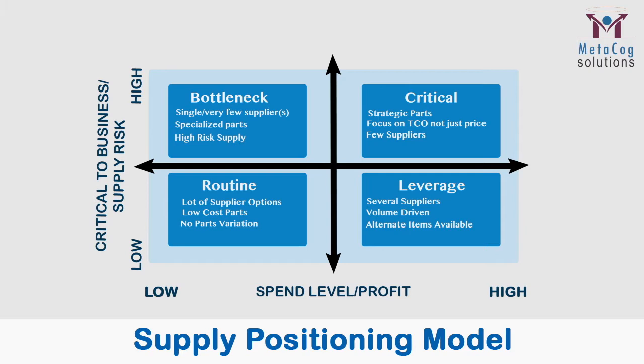One of the famous theories propounded by Mr. Peter Kraljic is the supply positioning model based on the matrix theory, which talks about the four quadrant levels of products being bought by a supply department. The impact of the product versus the share of business or money spent — the expenditure for a particular product on the X axis. This is one of the finest models which any supply chain professional should always have by heart, giving a clear understanding of what types of products are to be positioned in which quadrant and their characteristics.